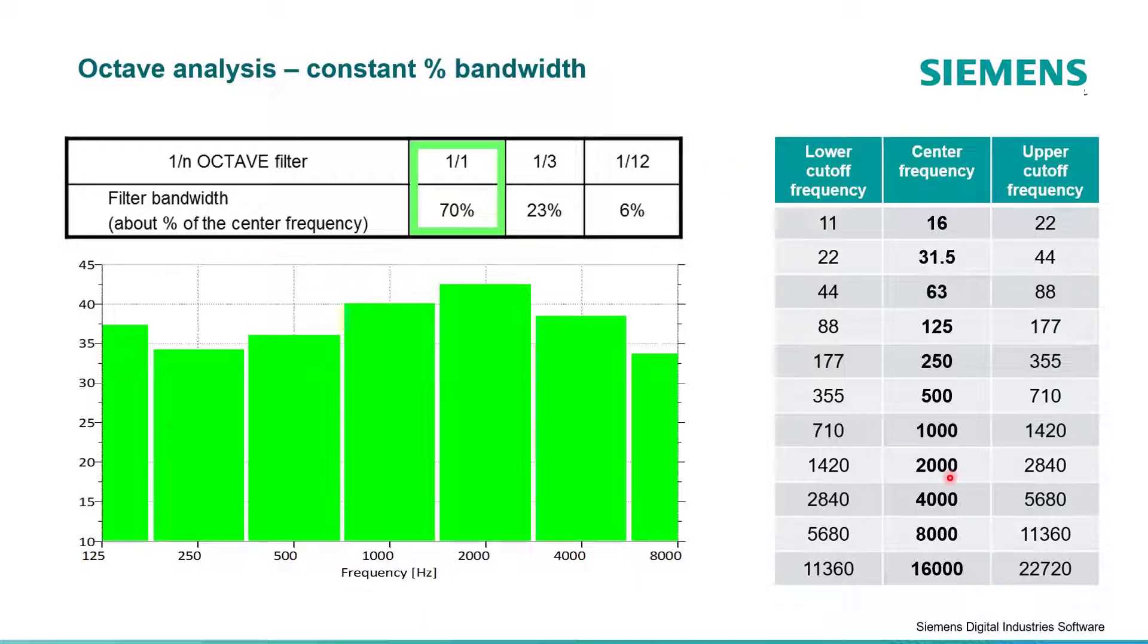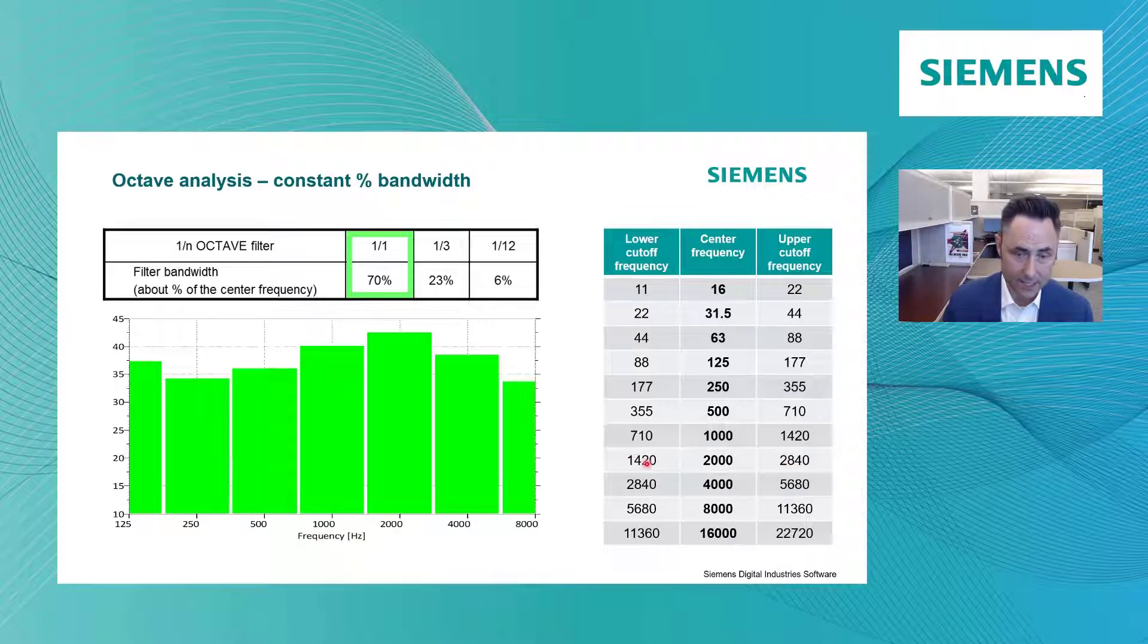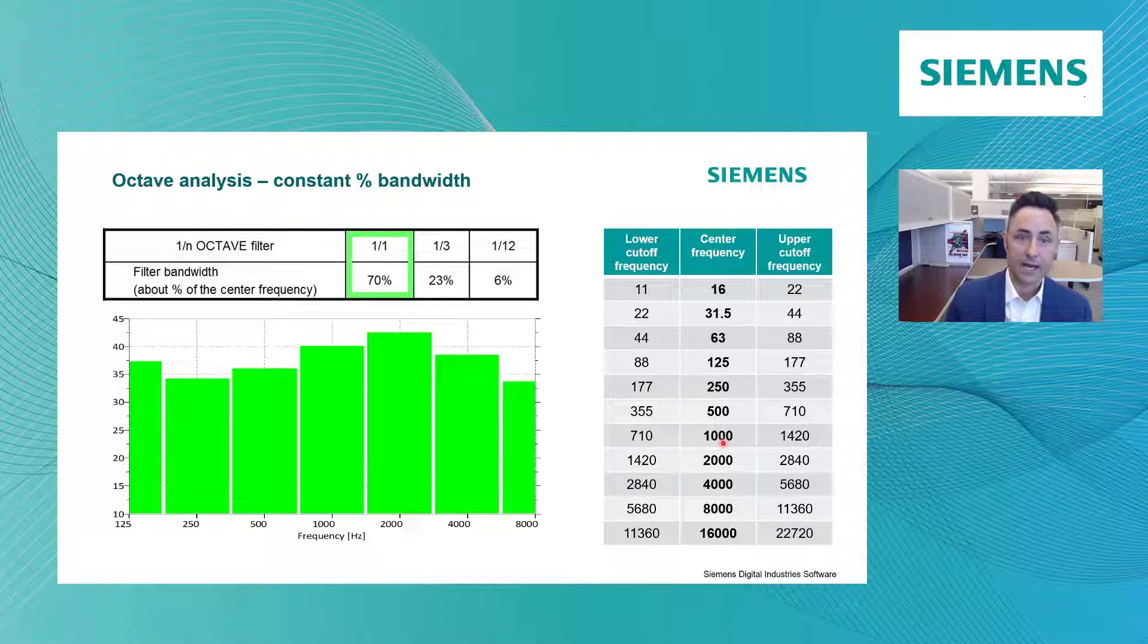Notice if I go up an octave band, now it's twice as much information. This is roughly 700 hertz, right? This is now 1,420 to 2,840, roughly 1,400 hertz. So there's twice as much frequency information being summed together. So they picked these numbers and these center bands out of convenience.